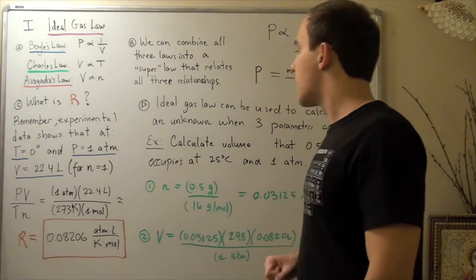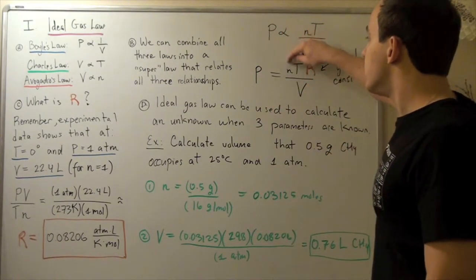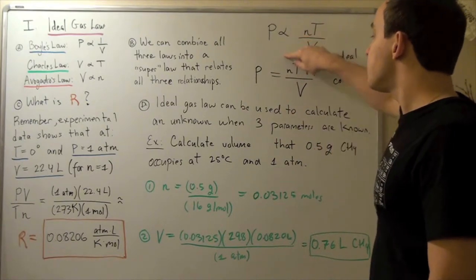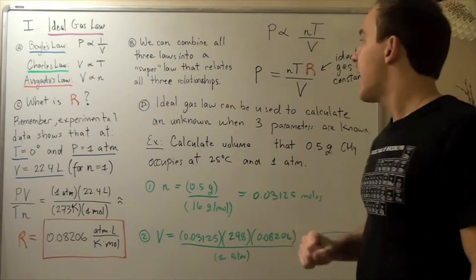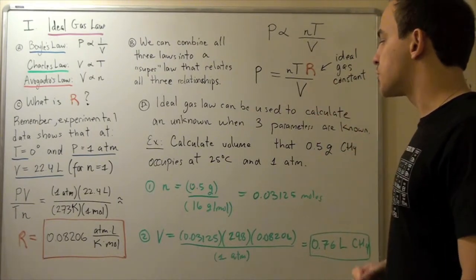So our first step will be to find our third unknown, to find our number of moles. If we find that, we have three knowns and one unknown. We'll solve for that unknown, namely volume, and we'll get our answer.